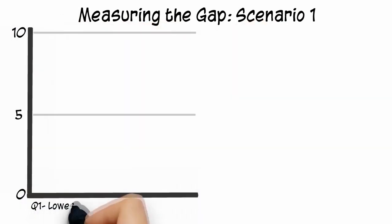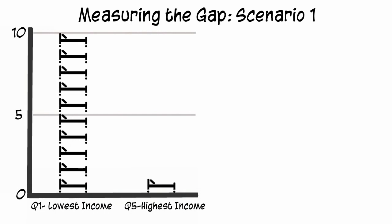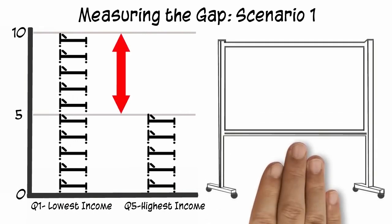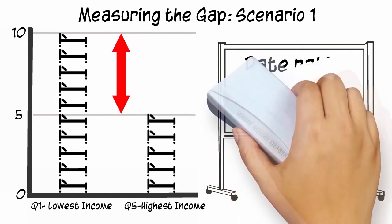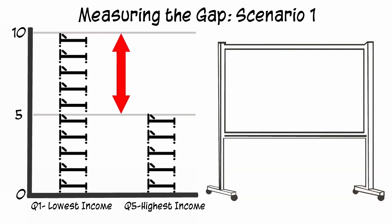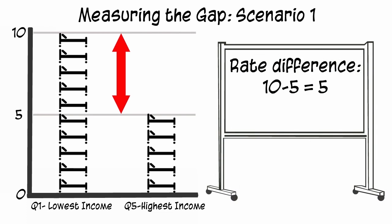Consider the following scenario. Let's say that the rate of hospitalization in the lowest income level is 10 for every 100 people, and the rate in the highest income level is 5 for every 100 people. The rate for the lowest income level is two times higher than the rate for the highest — this is the relative inequality. The rate for the lowest income level is also higher by 5 more cases for every 100 people — this is the absolute inequality.